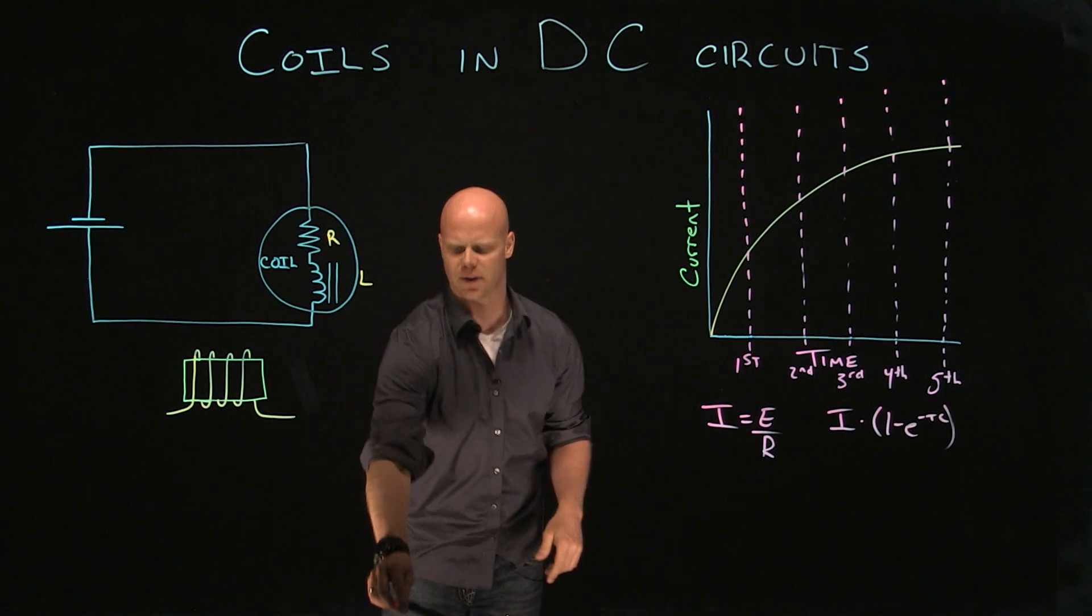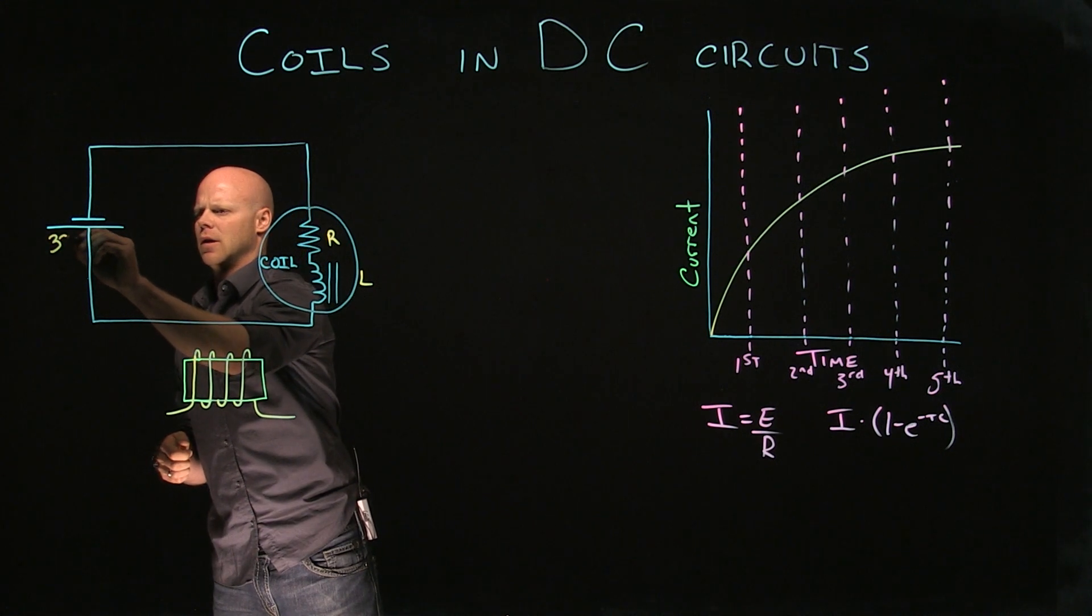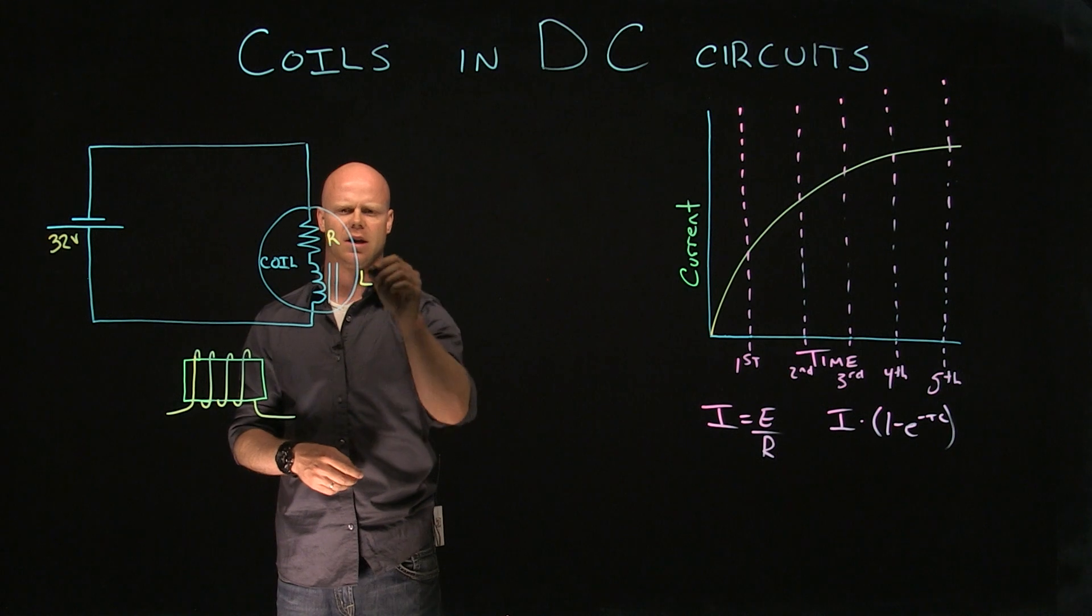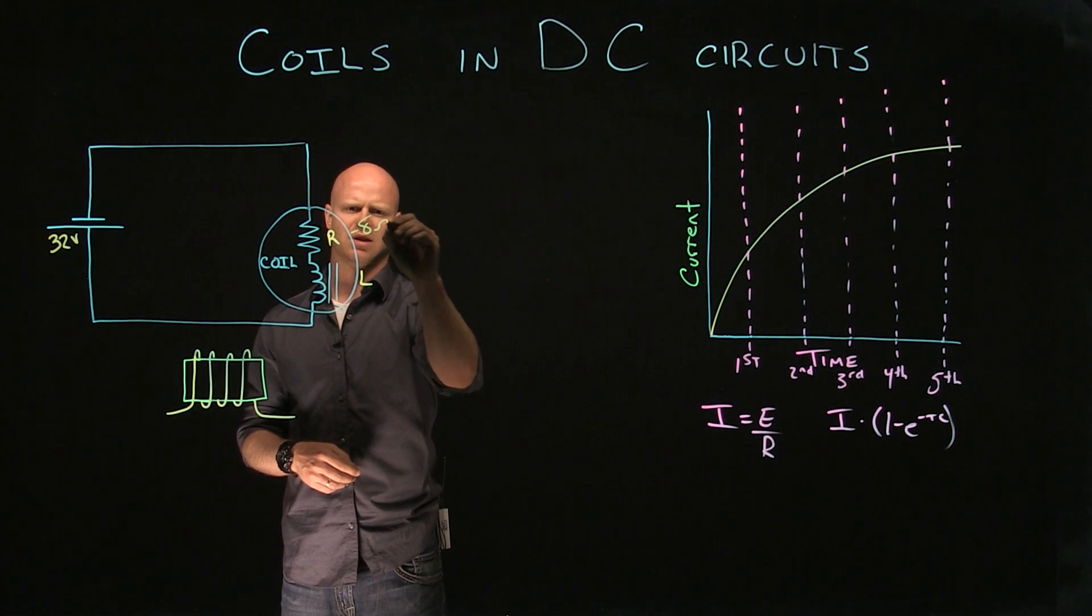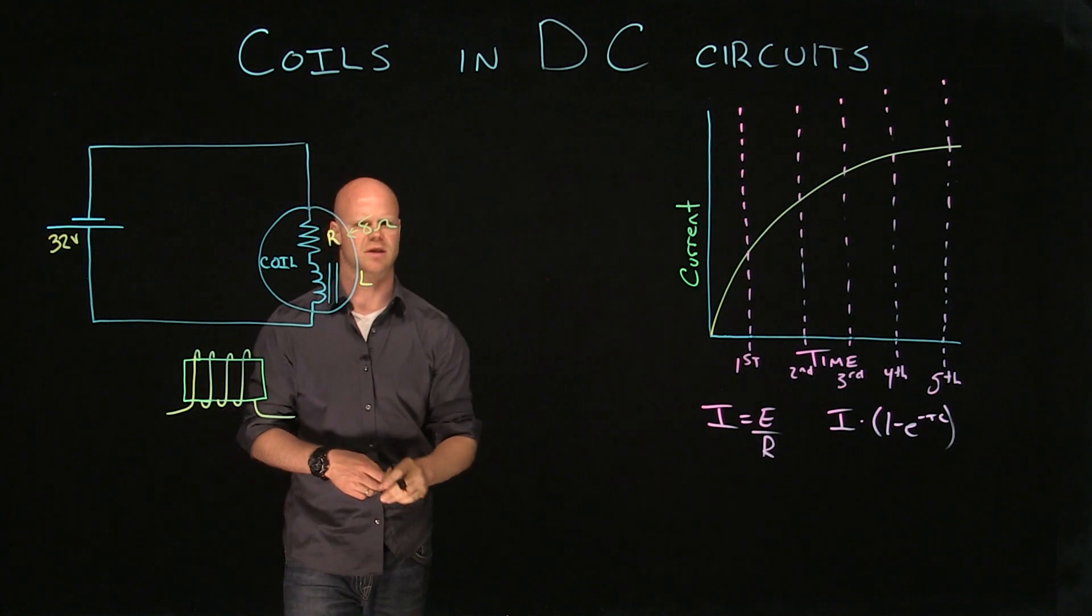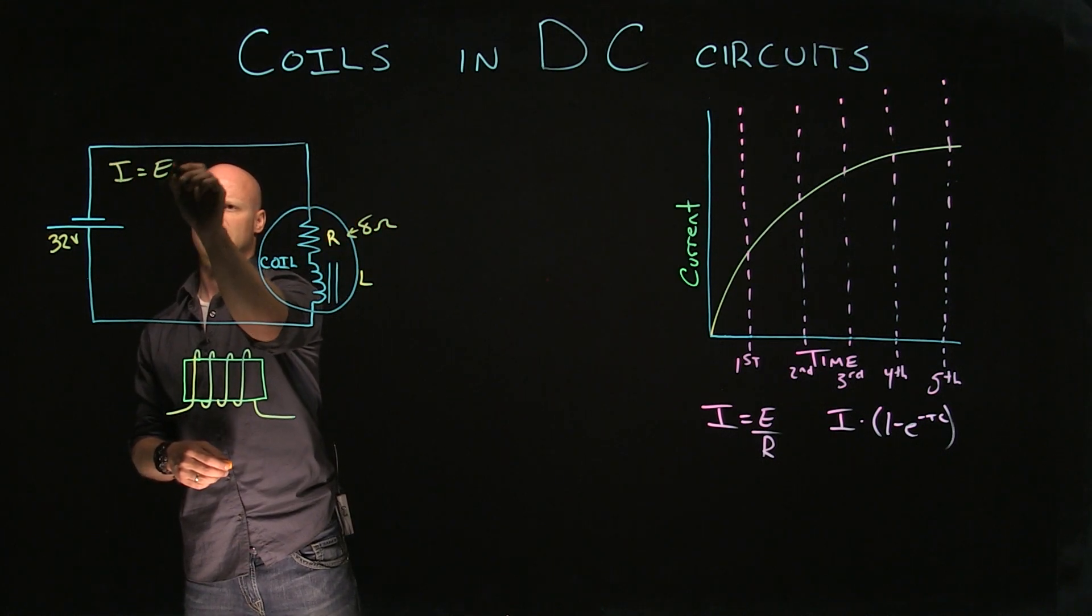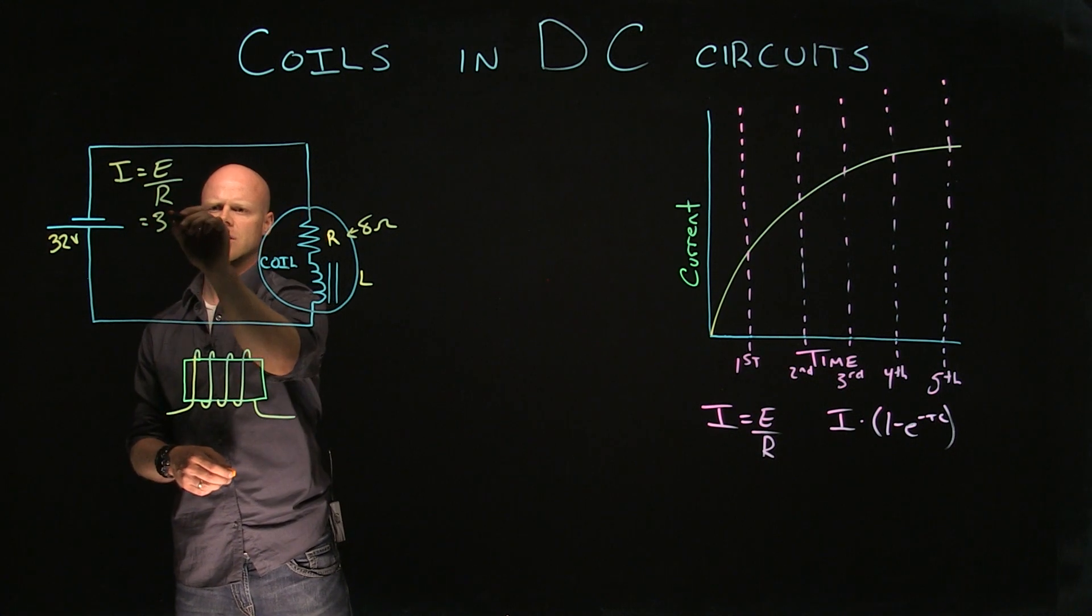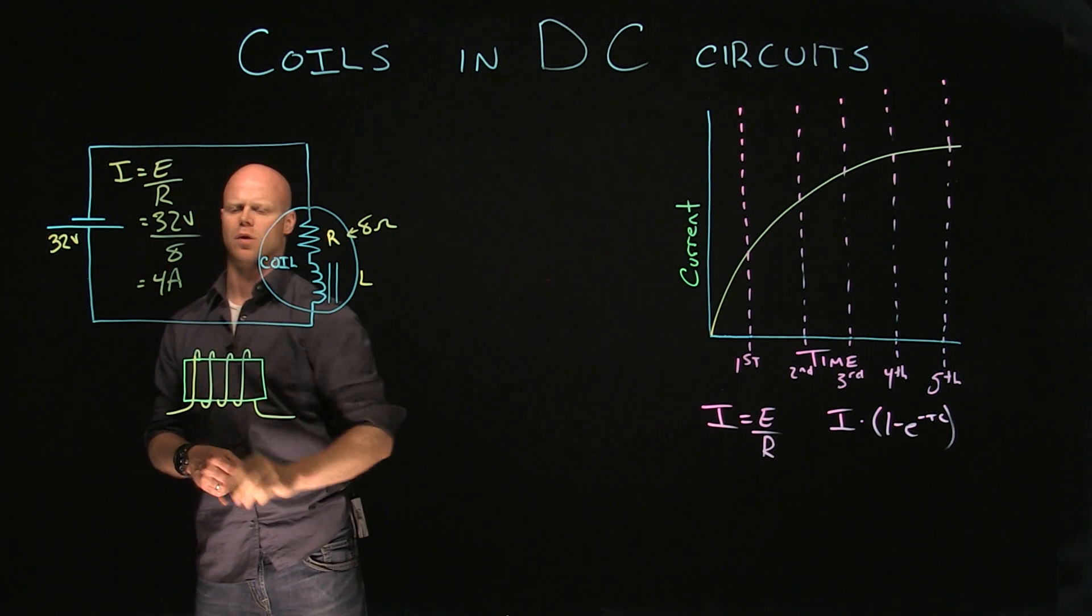So if we had, say, a 32 volt source and the resistive value of this coil, if I were to take an ohmmeter and measure it, let's make it easy for ourselves, let's say it was 8 ohms. I can use Ohm's law to show what that is. 32 volts divided by 8 ohms is going to give us 4 amps.